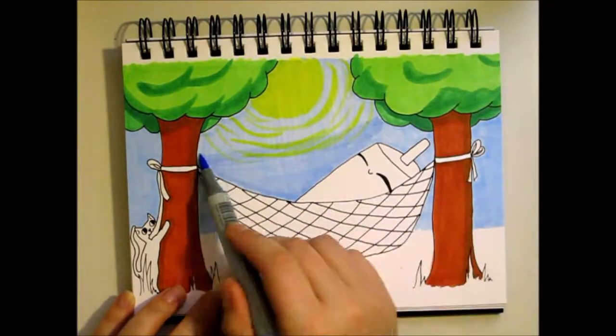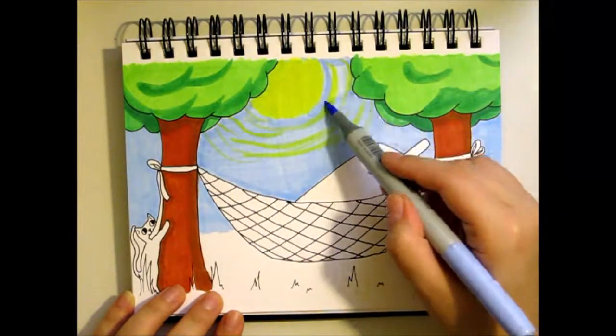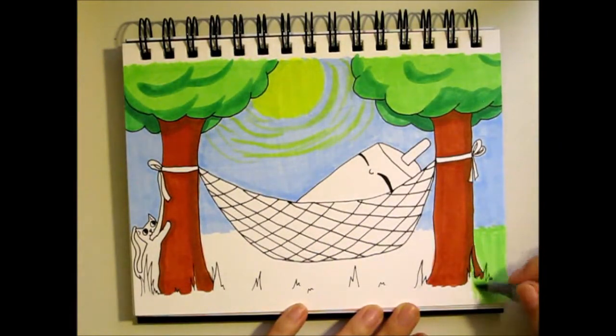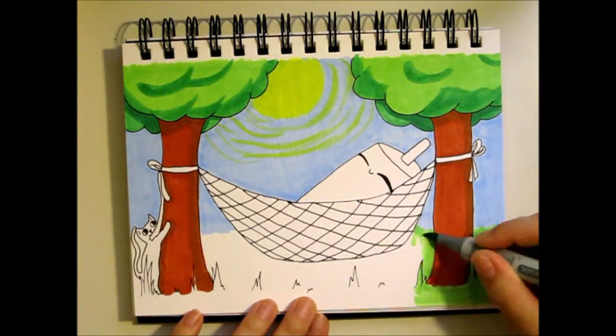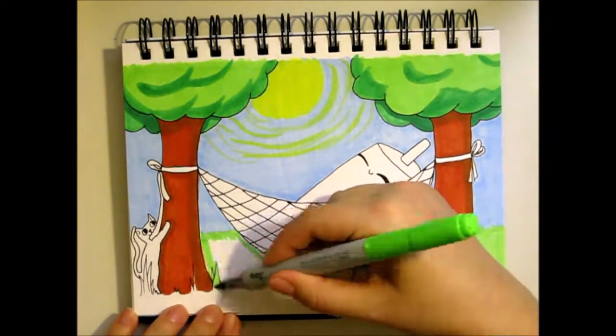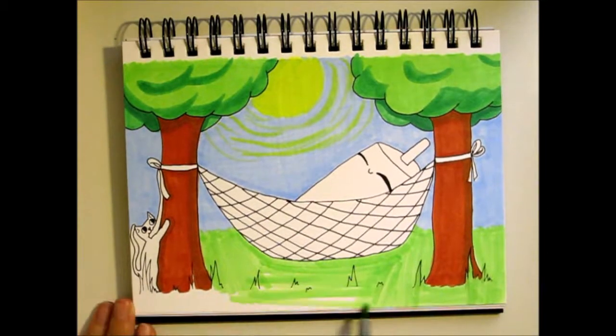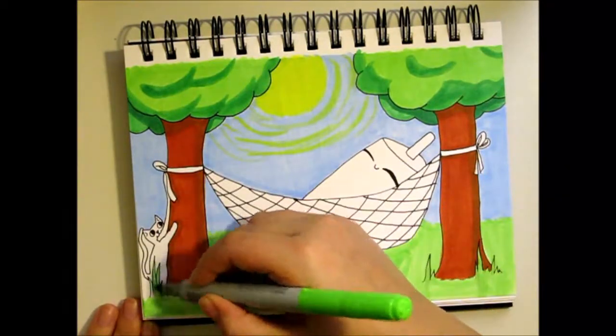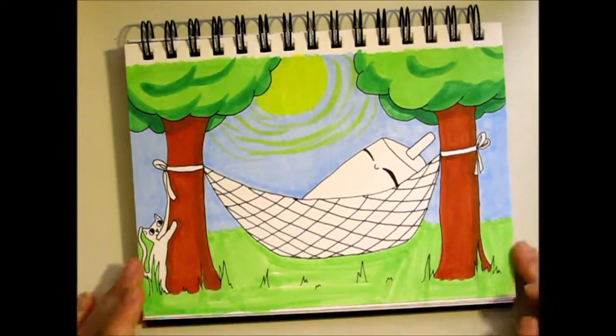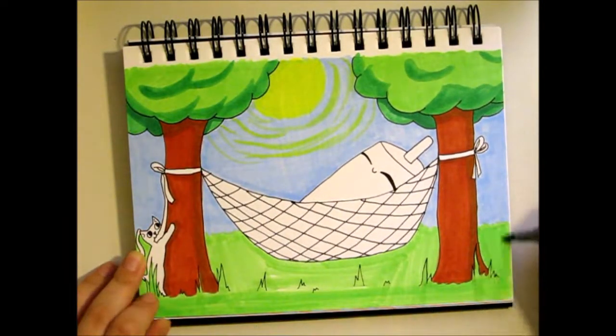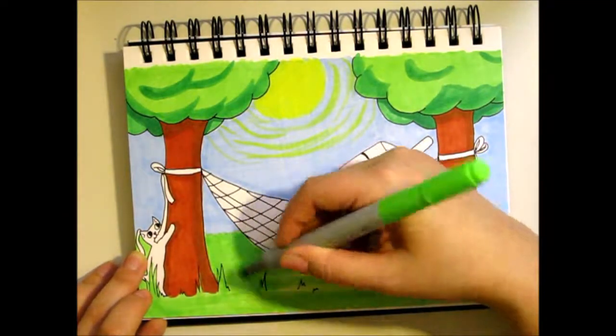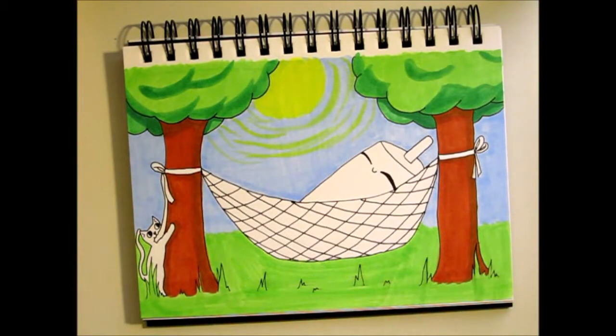So if you don't know, Copic markers are just alcohol-based markers. I have a review video on it. There's a ton on YouTube, too, so I recommend checking a few out if you're curious about how these markers are supposed to work, because how I'm using them here, it sort of looks like I'm a six-year-old coloring in a coloring page, which is not a problem. I definitely support coloring pages. I love them.